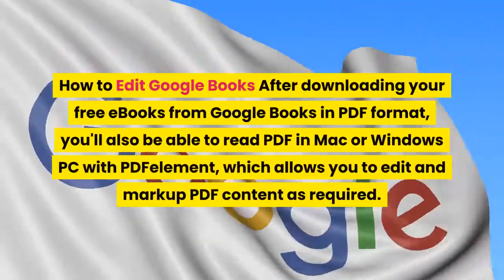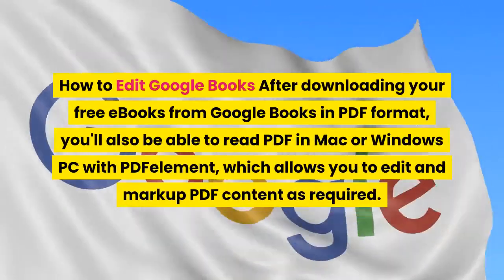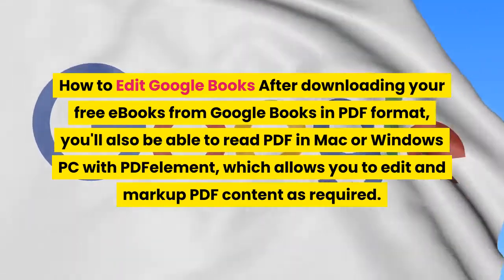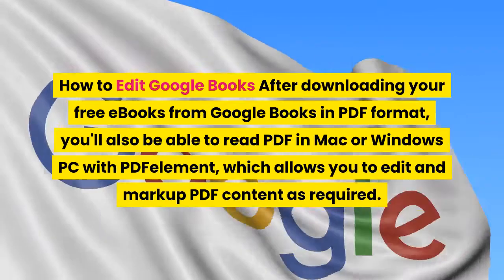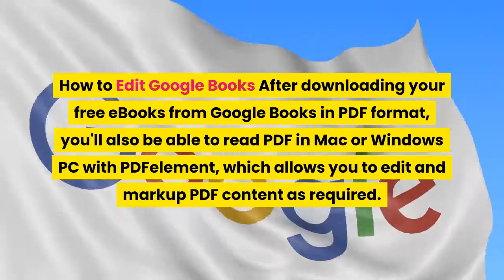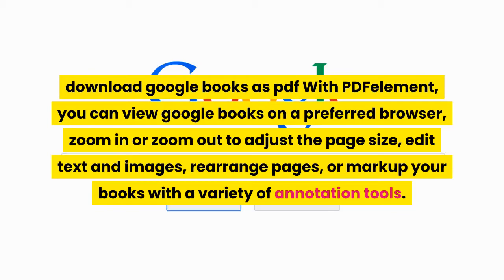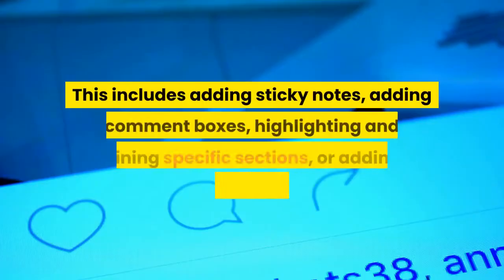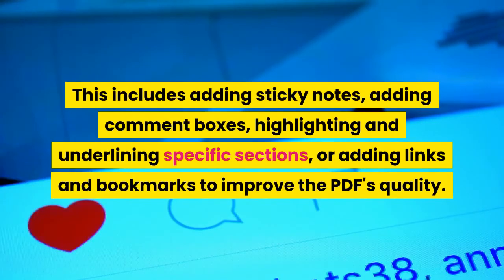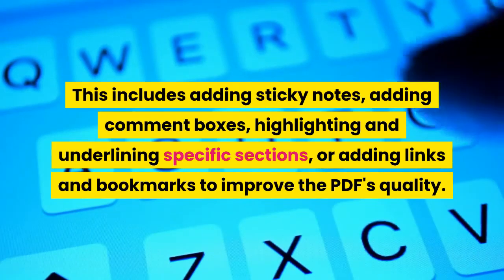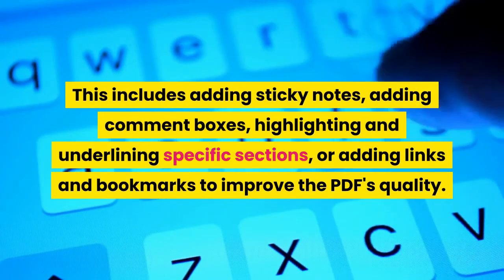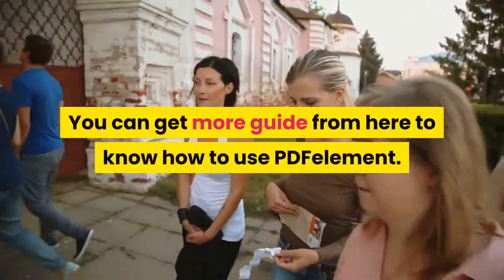After downloading your free eBooks from Google Books in PDF format, you'll also be able to read and edit PDF in Mac or Windows PC with PDF Element, which allows you to edit and markup PDF content as required. You can view Google Books on a preferred browser, zoom in or zoom out to adjust the page size, edit text and images, rearrange pages, or markup your books with a variety of annotation tools. This includes adding sticky notes, adding comment boxes, highlighting and underlining specific sections, or adding links and bookmarks to improve the PDF's quality. You can get more guidance from here to know how to use PDF Element.